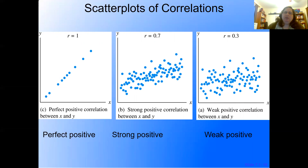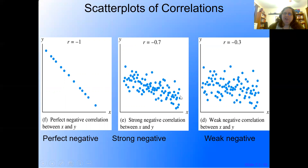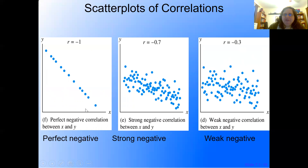You might wonder — what if the line went the other way, from upper left to lower right? That would still be a perfect correlation, just a perfect negative correlation — just as good as a perfect positive. We also have strong negative and weak negative correlations. In all cases they go from upper left to lower right. As X goes up, Y comes down — they move in opposite directions.